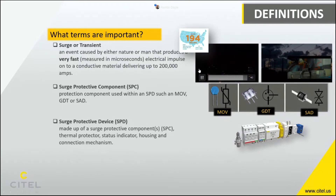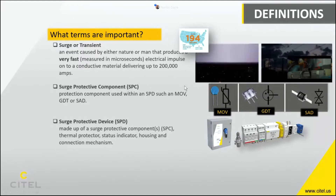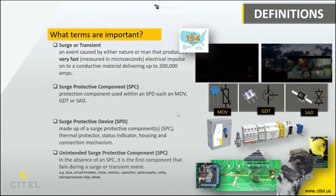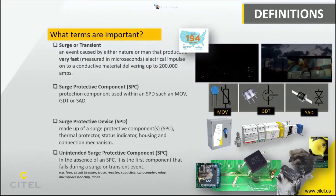The enclosure unit would have been considered in the past a transient voltage surge suppressor or TVSS; today we call them SPDs. My favorite term is the 'unintended SPC' — when no surge protector is employed in the design, it becomes the component that fails first. It can be anything: a PCB trace, microprocessor, circuit breaker, fuse, or capacitor. Our goal is always to make sure the unintended SPCs of the world are safe from surges.